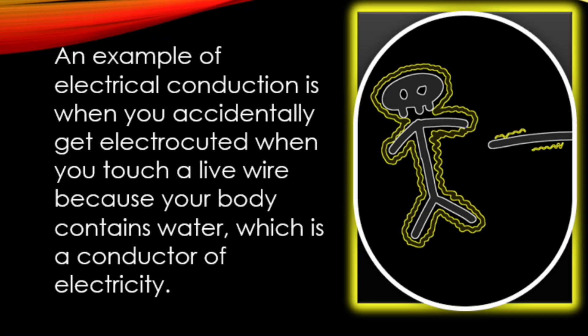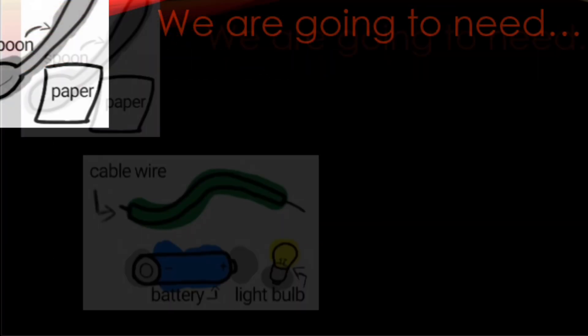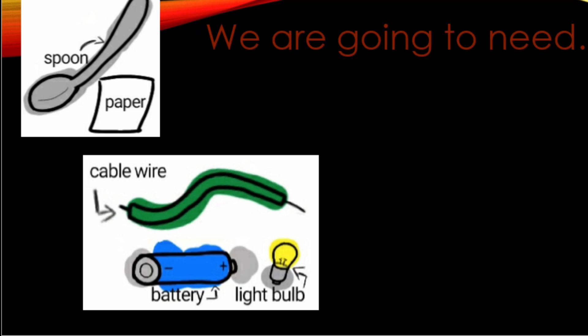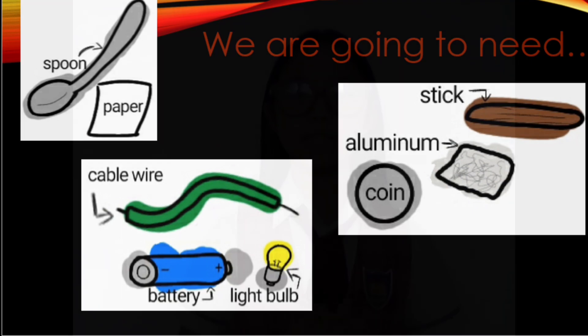We are going to need a spoon, a paper, a cable wire, some batteries, a light bulb, an ice cream stick, an aluminum foil, and a coin. We are going to make a small electric circuit.